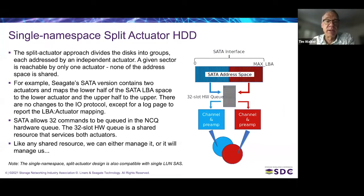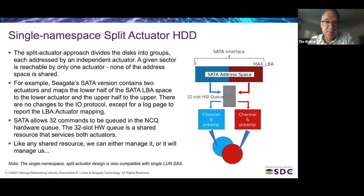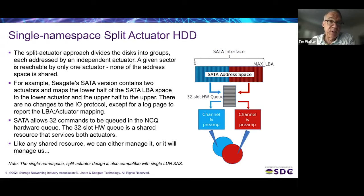On this kind of design most of the system is independent — we have independent read channels, independent servos, independent preamps, independent actuators. Most of the silicon on the controller is independent between the two actuators. But because it's SATA with only a single namespace and single endpoint, we have to share the command queue — the hardware command queue — and with SATA it's only 32 deep. It's easy to envision the case where the queue is monopolized by commands from one actuator and there's no room for commands from the other actuator.